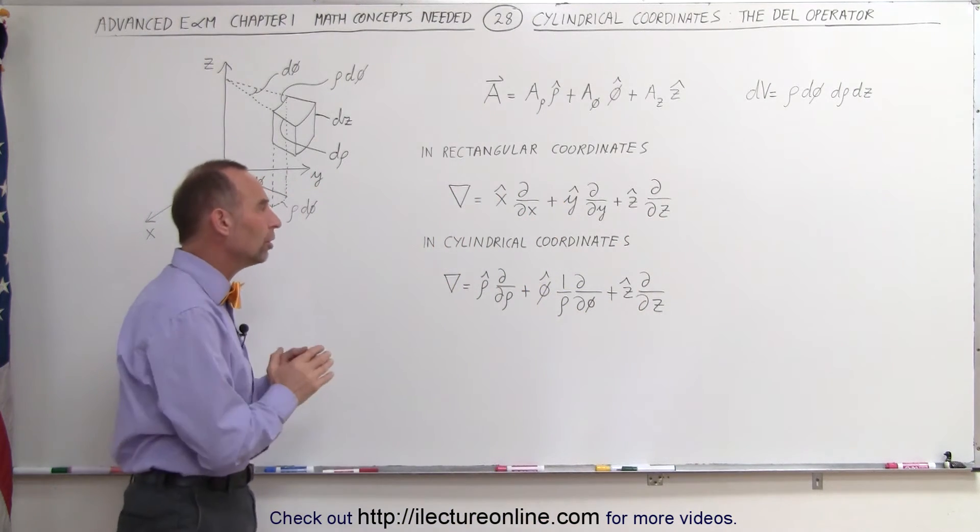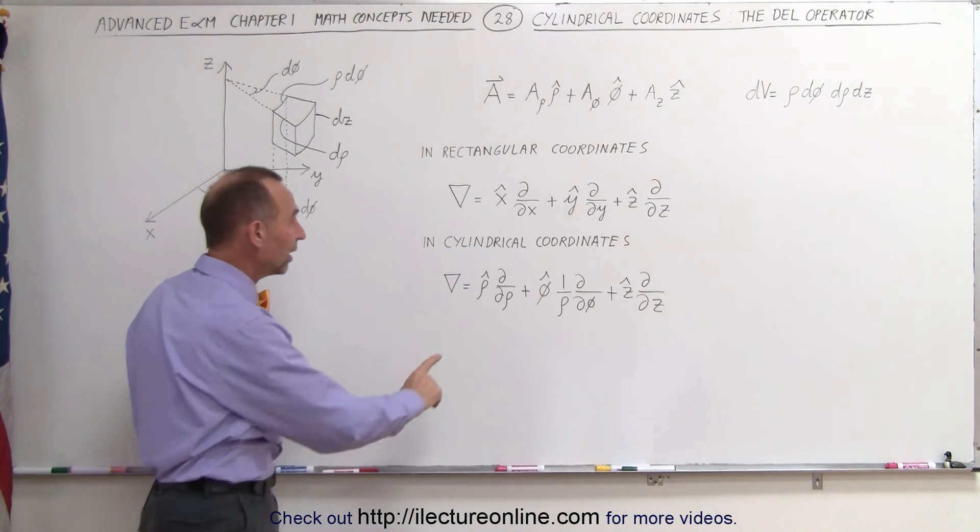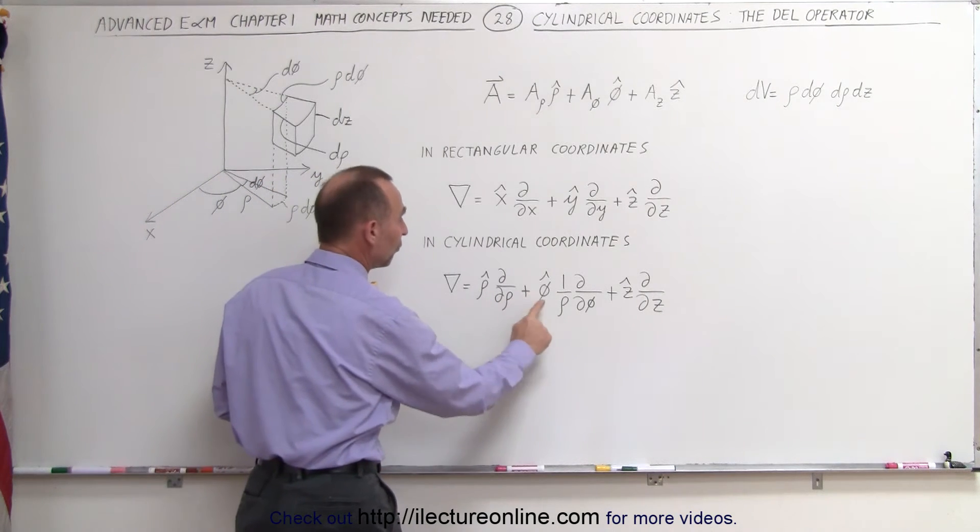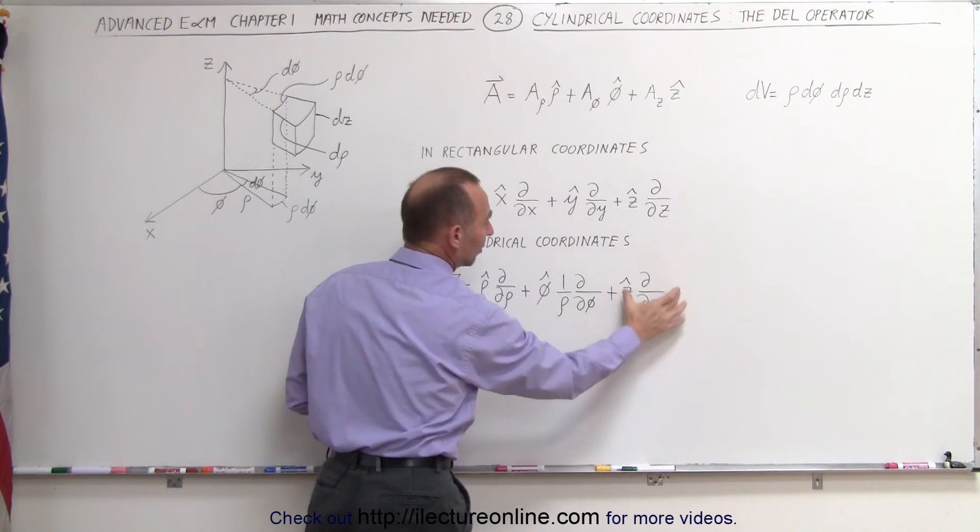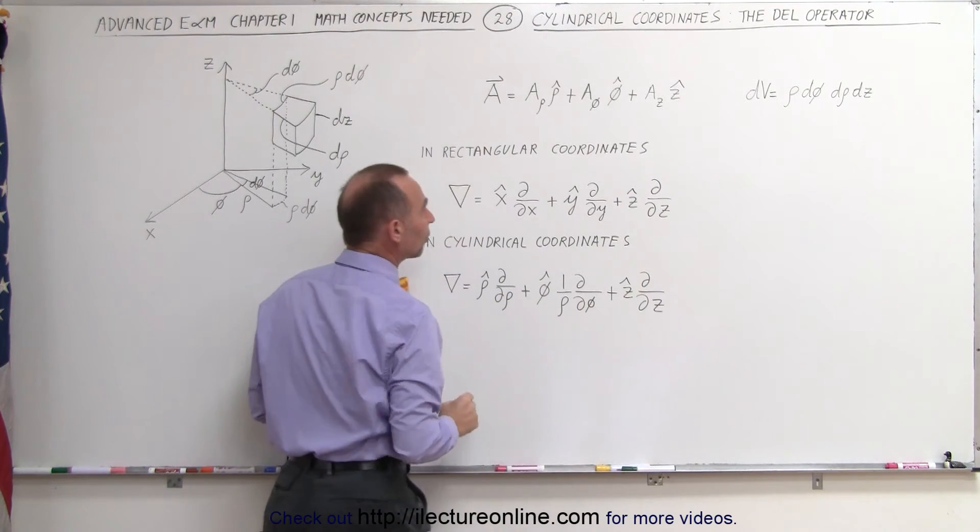So how do we do that in cylindrical coordinates? Well it's a little bit different. We still have the three unit vectors. We have rho, phi, and z. Notice that this has to look exactly the same as it does in rectangular coordinates.